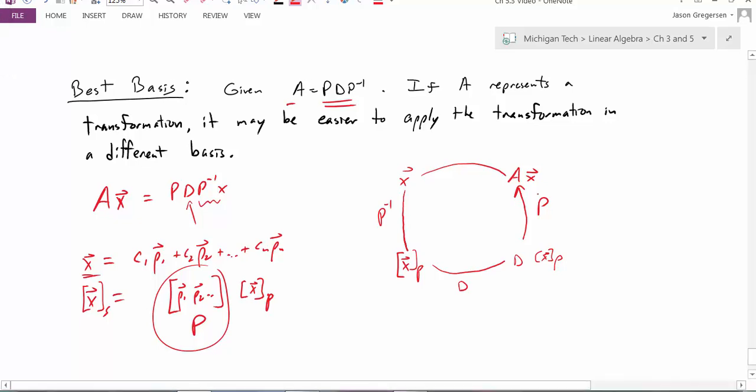Another way we can think about this diagonalization is by looking at its action on a vector X. First, we change the basis, and then we do a simplified version of the transformation, and then we change our basis back.